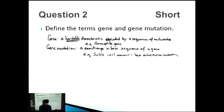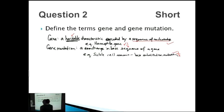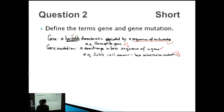Marks are most likely allocated as roughly half a mark each. Being heritable is a mark, encoded by a sequence of nucleotides is probably another mark, and gene mutation as a change in the base sequence of a gene is a simple one. So you're looking at four marks there — four out of four.